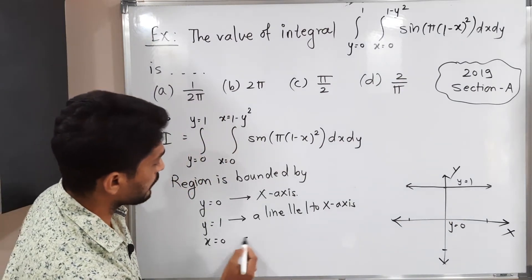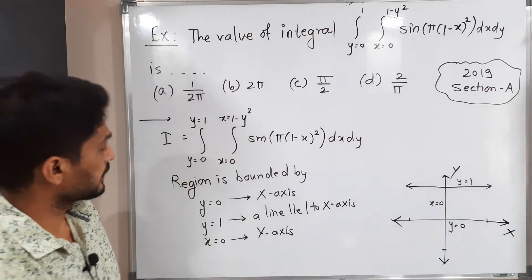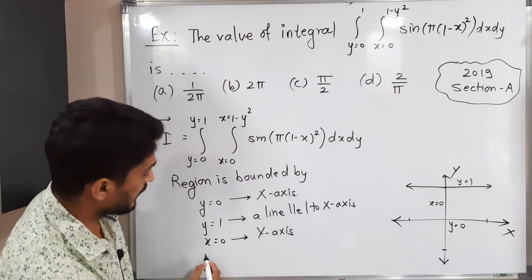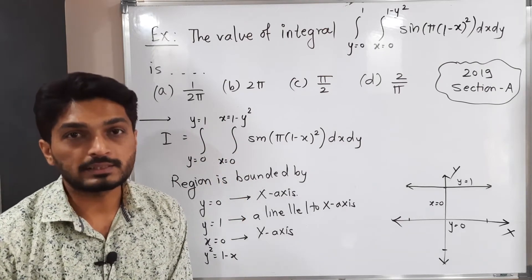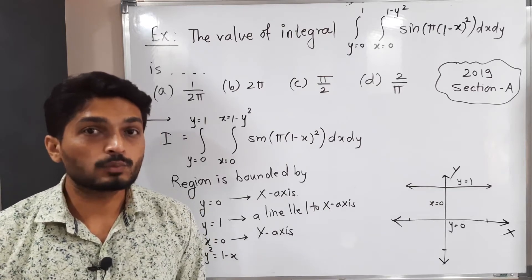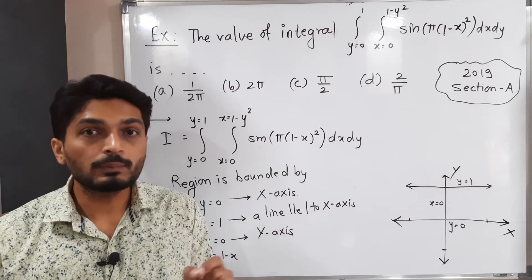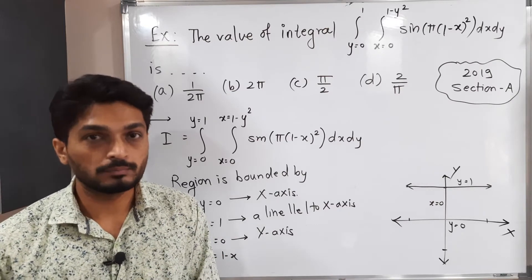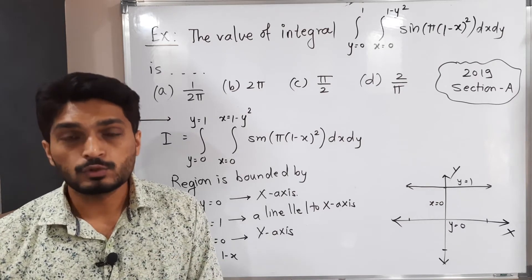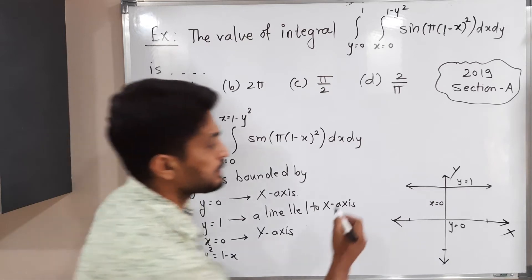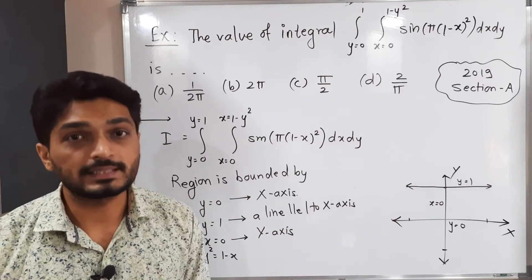Next, X = 0 is the equation of the Y-axis. The last boundary is X = 1 − Y², or equivalently Y² = 1 − X. This is the equation of a parabola — if the power of one variable is 1 and the power of the second variable is 2, it is 100% a parabola. Since X has a minus sign, the parabola opens in the negative X-axis direction.